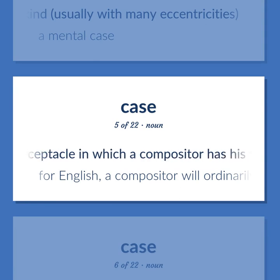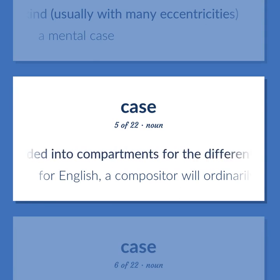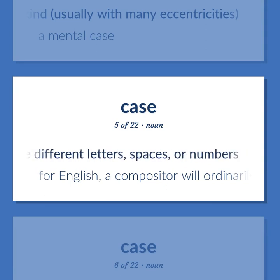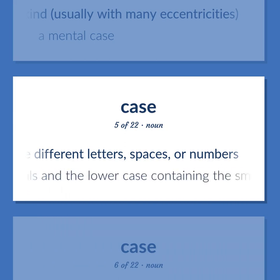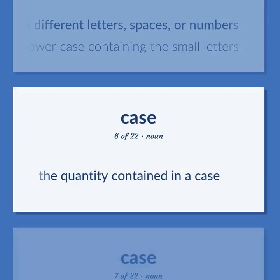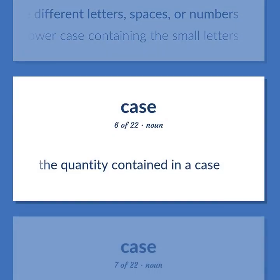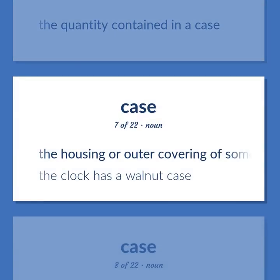Printing: The receptacle in which a compositor has his type, divided into compartments for the different letters, spaces, or numbers. For English, a compositor will ordinarily have two such cases — the uppercase containing the capitals and the lowercase containing the small letters. The quantity contained in a case. The housing or outer covering of something — the clock has a walnut case.